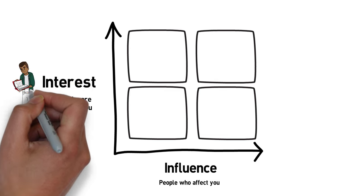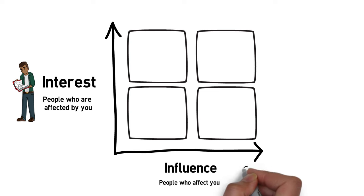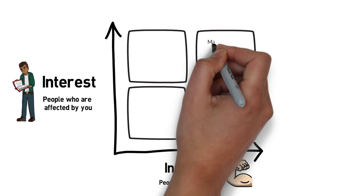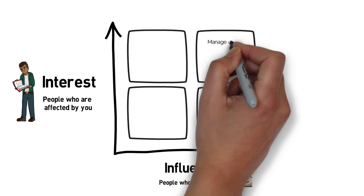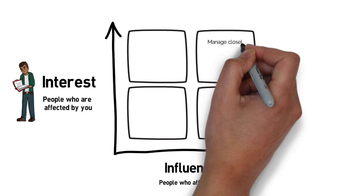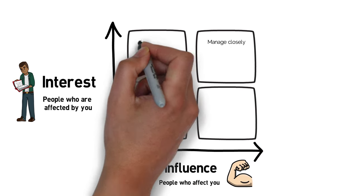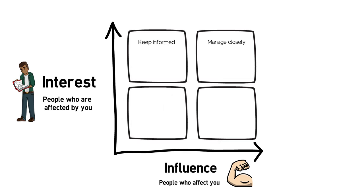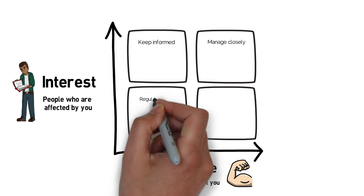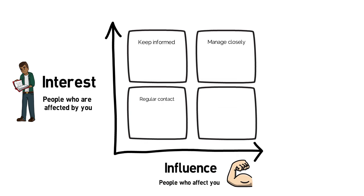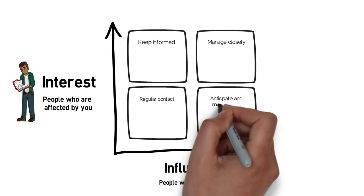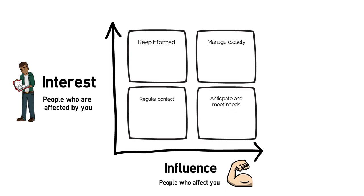Depending on where people fall within these four quadrants will depend on what you do with them. If they have a high level of influence and also a high level of interest, we want to manage them closely. If they have a high level of interest, we want to keep them informed. A lower level of interest and a lower level of influence just requires some regular contact. If they've got a high level of influence but a low level of interest, then we need to anticipate and meet their needs.